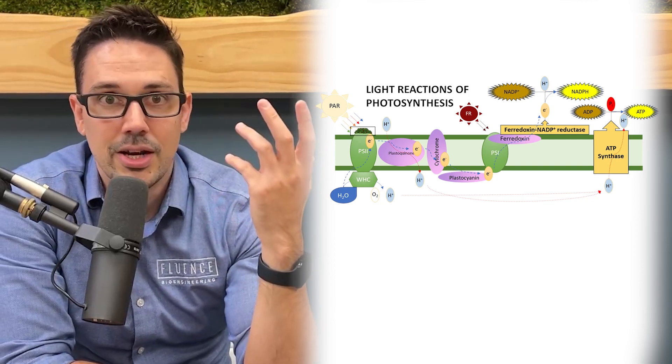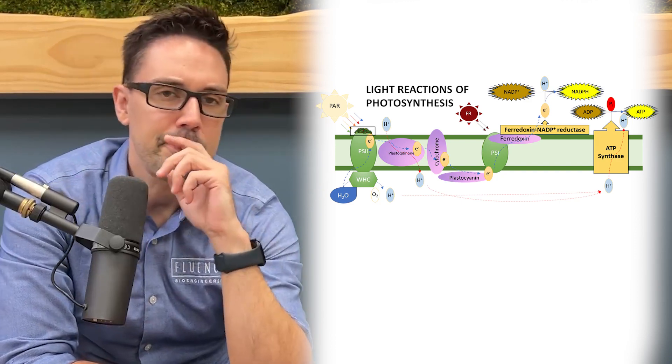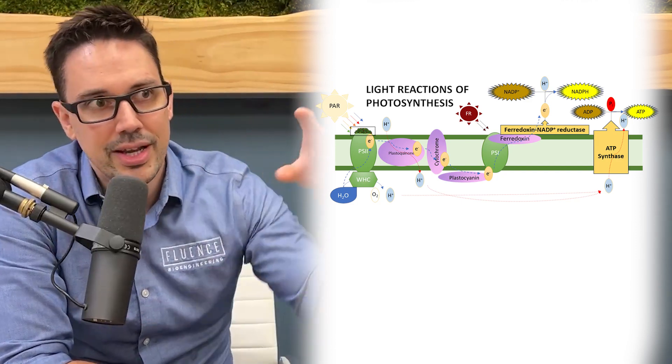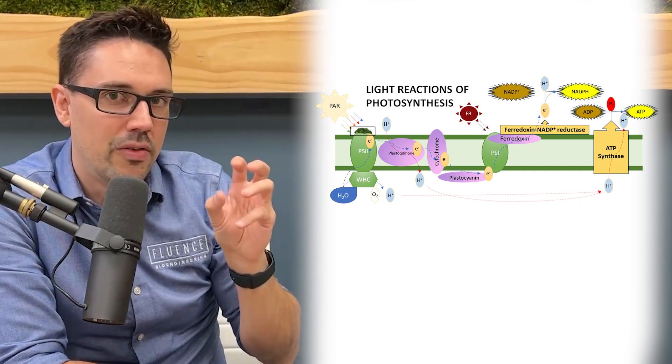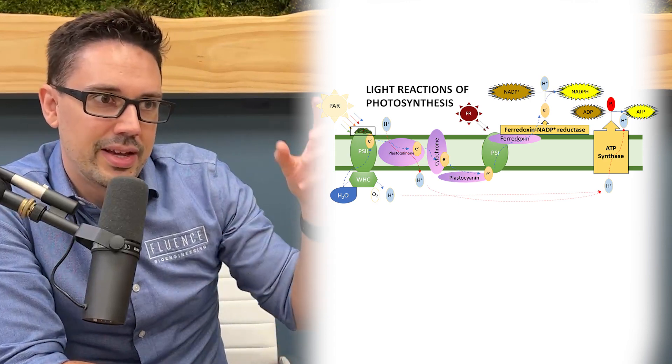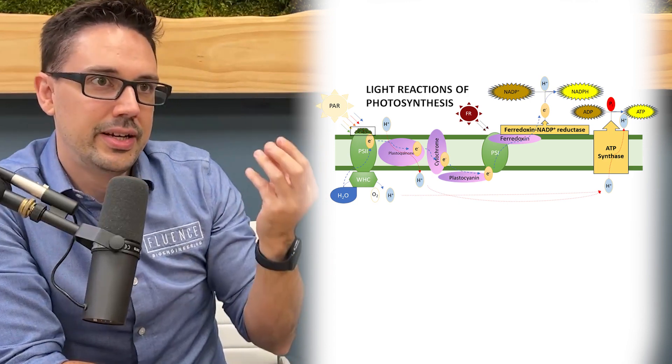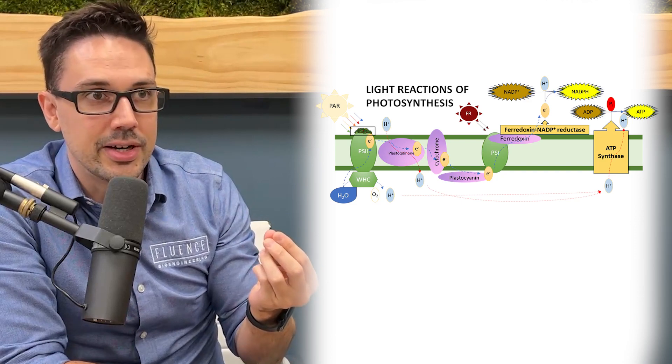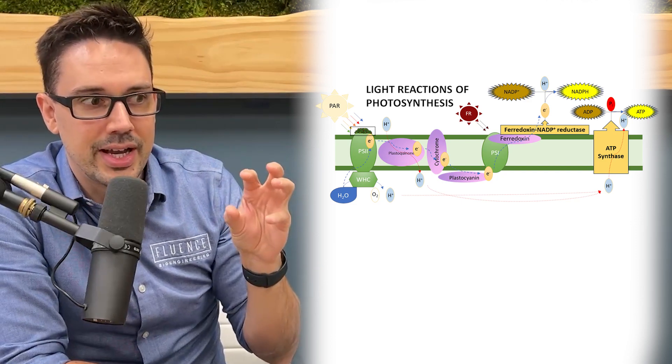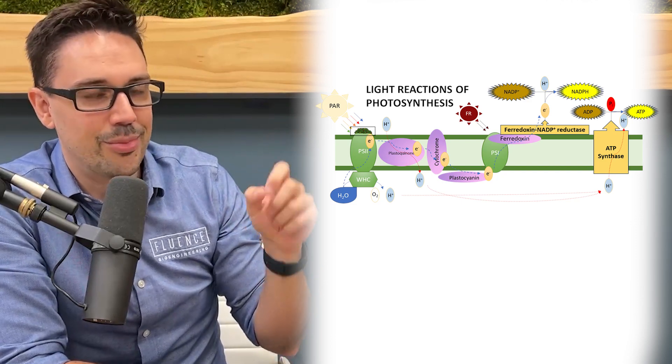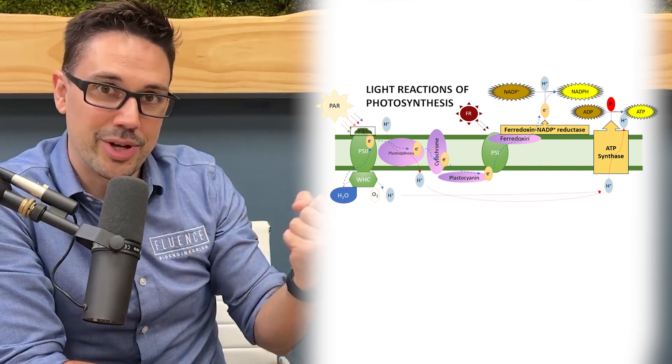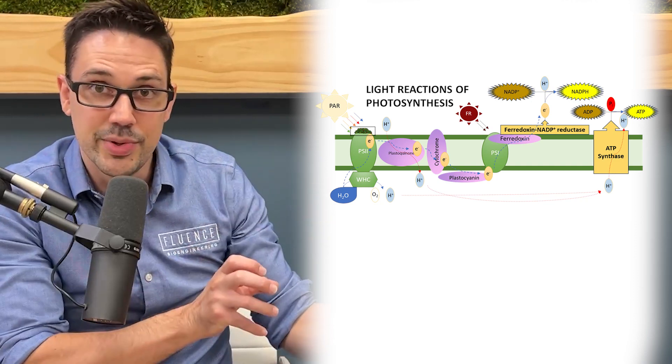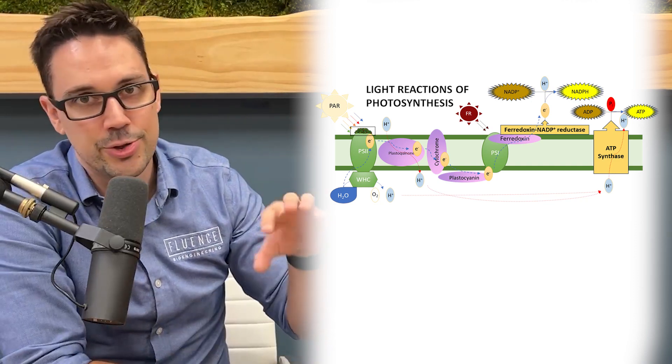In the case of the light reactions of photosynthesis, that light energy is captured and transferred through Photosystem II. When that energy gets to the reaction center, the reaction center has a water-harvesting complex that can take a molecule of water and split it into its constituent parts - hydrogen and oxygen.